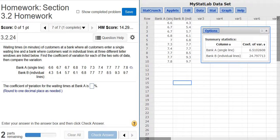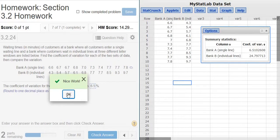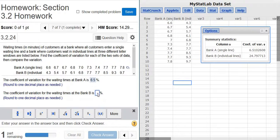There are all the answers. Rounding to one decimal place, it's 6.5 for bank A and 24.8 for bank B.